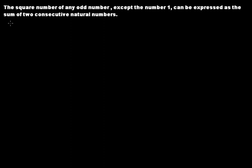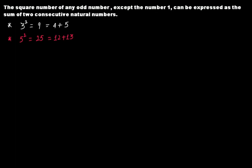Let's take odd number 3. If you find the square of 3 you get 9, and this 9 can be written as 4 plus 5. Let's take another number: 5. Find its square, you get 25, and this 25 can be written as 12 plus 13. If you take 7, you find its square and get 49, and this can be written as 24 plus 25.